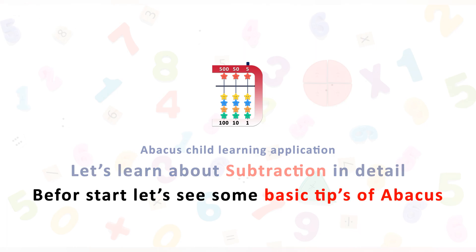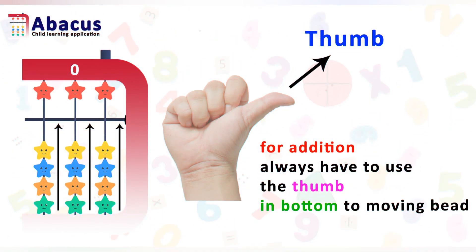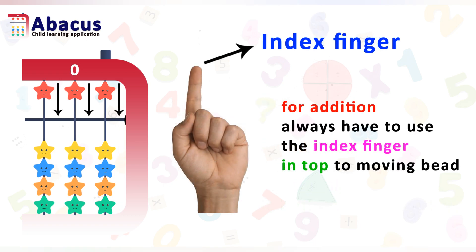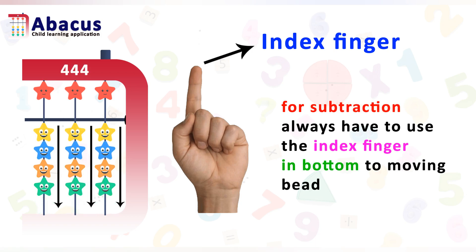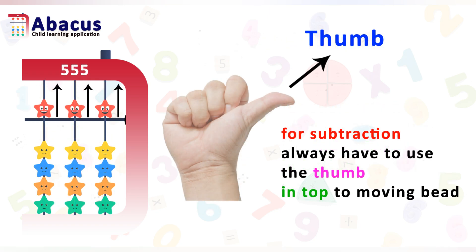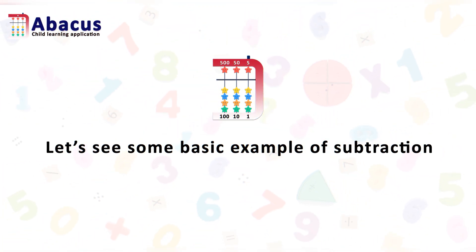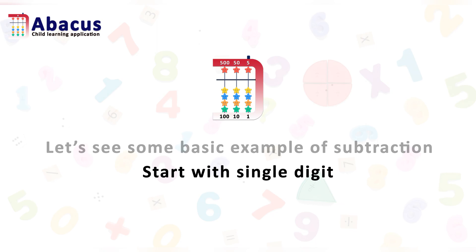Before we start, let's see some basic tips of abacus. For addition, use your thumb at the bottom to move beads, and at the top use your index finger to move beads. For subtraction, use your index finger at the bottom to move beads, and at the top use your thumb to move beads.